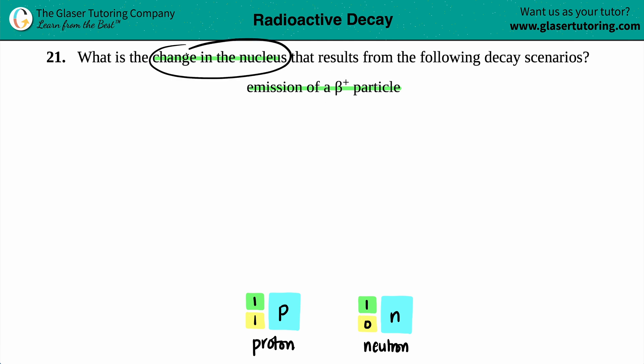Okay, so we want to know what's going on with the nucleus when we emit a positron. So just know that a beta with a positive sign, that is called a positron. And the positron, am I spelling this right? That looks good. A positron.